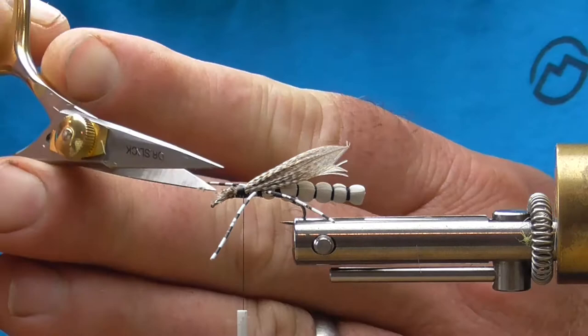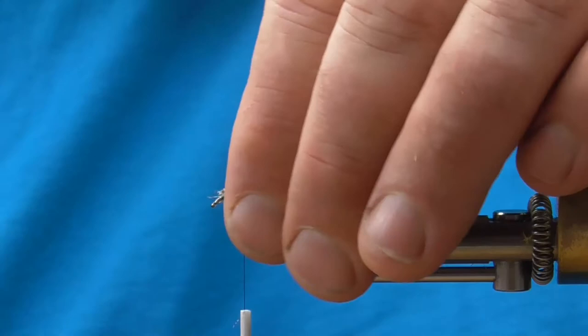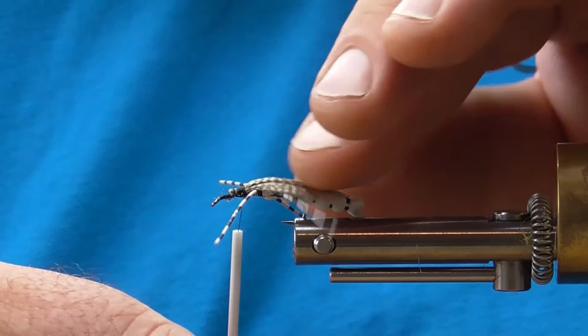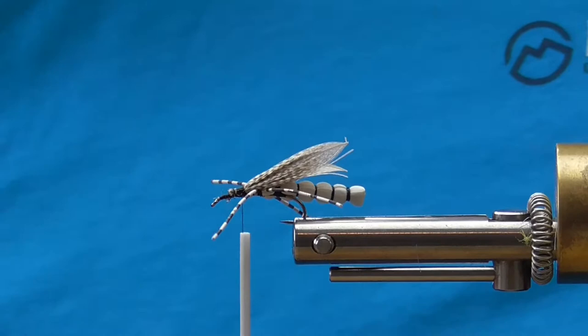And then we can wrap down and clean some of that up and trap those fibers down against the hook. And I'm also going to create a little bit of a top wing. We've got our back over wings.